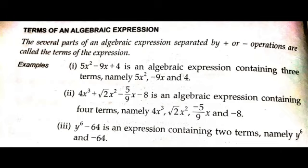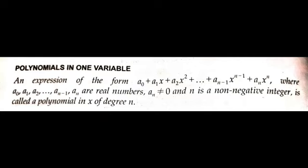Now we are in a position to define polynomial in one variable. It is defined as an expression of the form a₀ + a₁x + a₂x² + … + aₙxⁿ, where a₀, a₁, a₂, …, aₙ are real numbers. It is very important to note that aₙ should not be equal to 0, and n is a non-negative integer. This is called a polynomial in x of degree n.